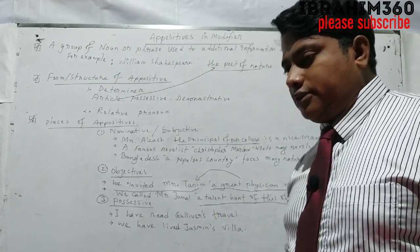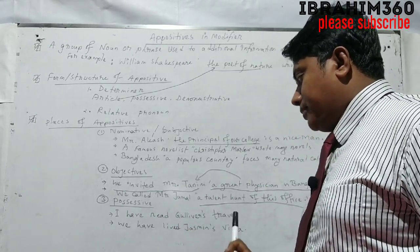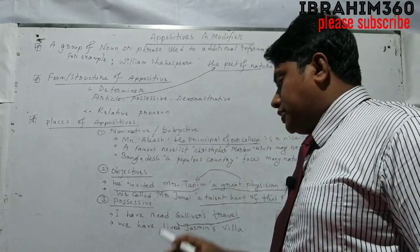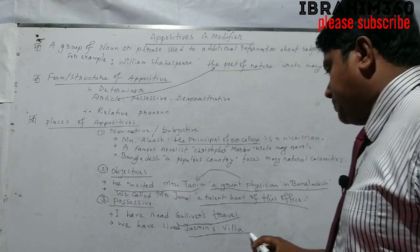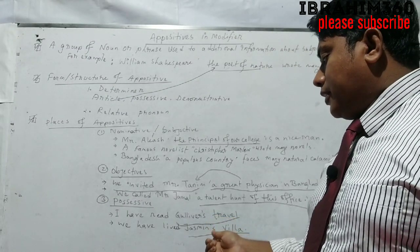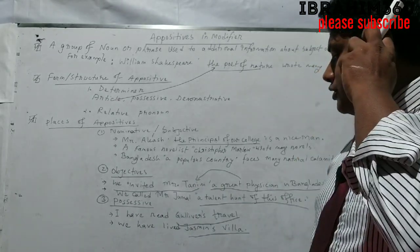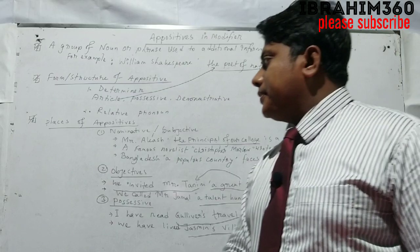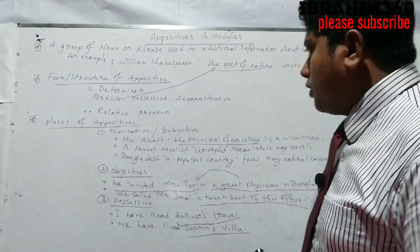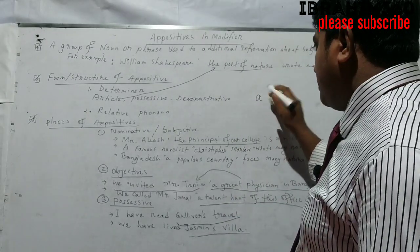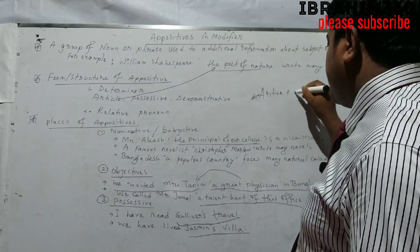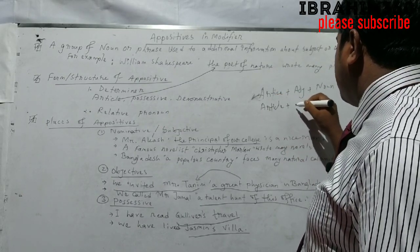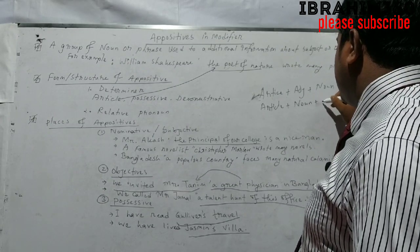Finally, possessive appositives. Sometimes we see appositives used in possessive form. For example: I have read Gulliver's Travels — here the appositive functions in a possessive structure. The structure of an appositive can be: article plus adjective plus noun, or article plus noun plus adjective.